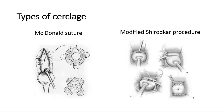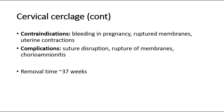Another type of cerclage is the modified Shirodkar procedure. It is more complicated and involves an anterior incision, placement and tying of a special Mersilene tape, with suturing of the cervical mucosa back in place. This is reserved for patients who have failed the McDonald's suture.